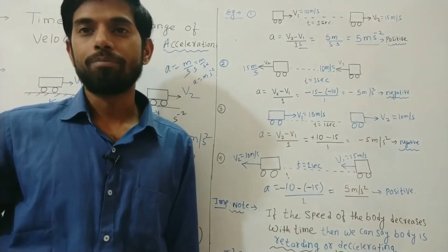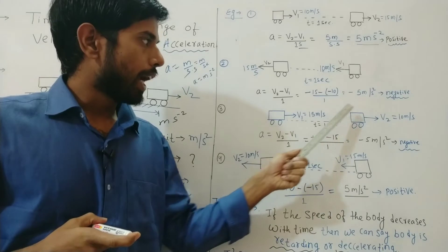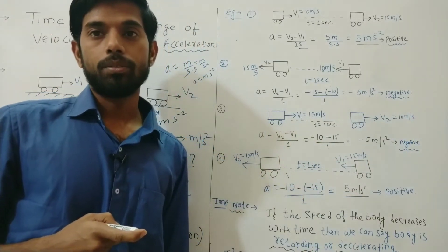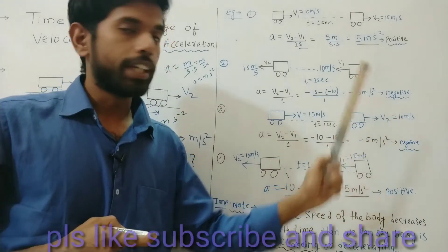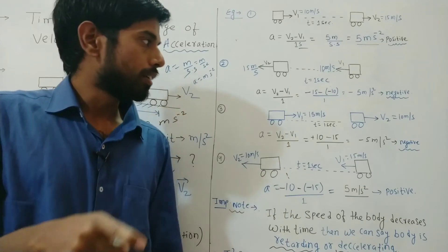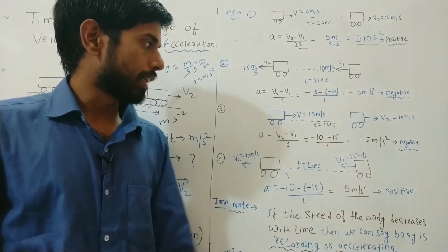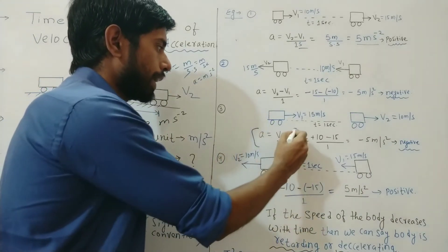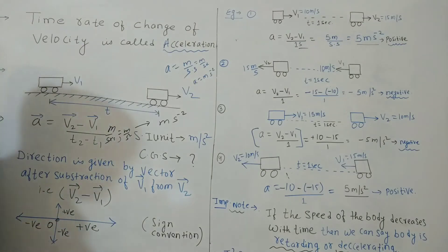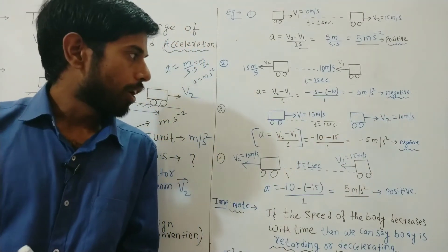Similarly, if an object has an initial velocity of 15 m/s and a final velocity of 10 m/s moving toward the right — we call it velocity because it has a particular direction. Speed would only give the magnitude. Since both velocities are toward the right, sign convention makes both positive. Acceleration = (10 − 15) / 1 = −5 m/s². Here acceleration is negative.